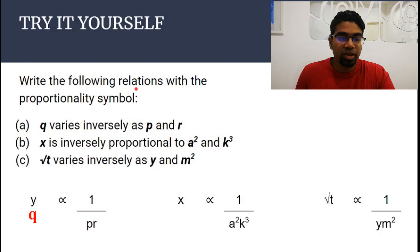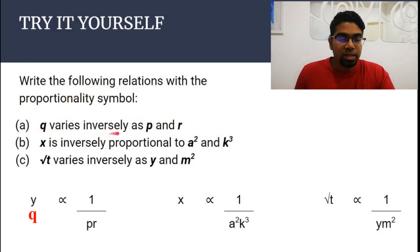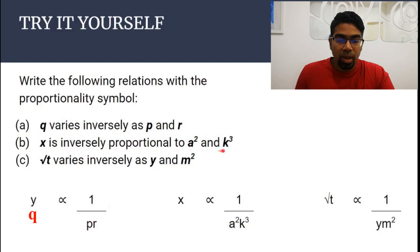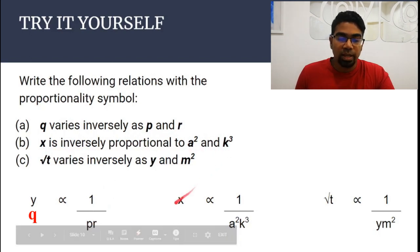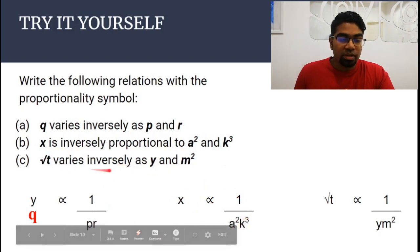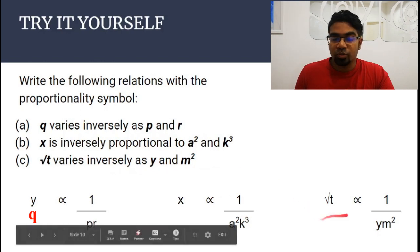Write the following relations with the proportionality symbol. (a) q varies inversely as p and r — the moment you see inversely, you know these belong in the denominator, so y is proportional to 1 over pr. (b) x is inversely proportional to a squared and k cubed — so x is proportional to 1 over a squared times k cubed. (c) Square root of t varies inversely as y and m squared — so square root of t is proportional to 1 over y times m squared.